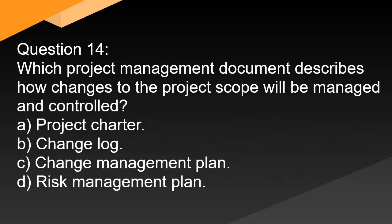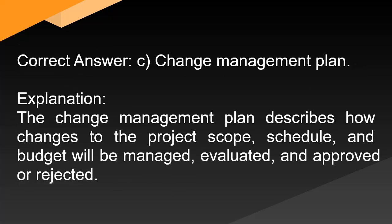Question 14: Which project management document describes how changes to the project's scope will be managed and controlled? A. Project charter. B. Change log. C. Change management plan. D. Risk management plan. Correct answer: C. Change management plan. Explanation: The change management plan describes how changes to the project's scope, schedule, and budget will be managed, evaluated, and approved or rejected.